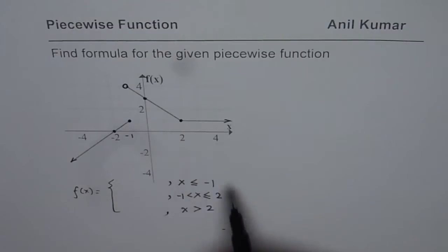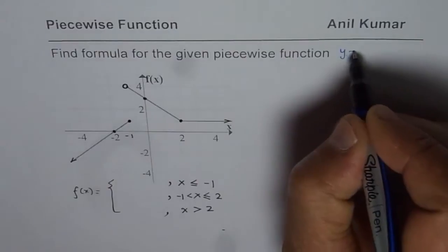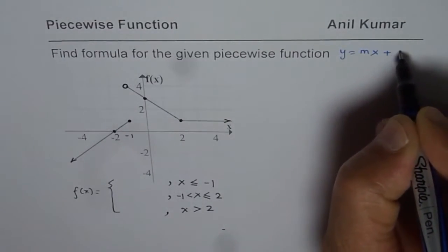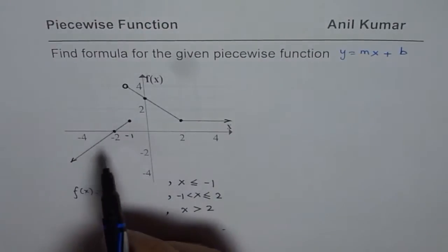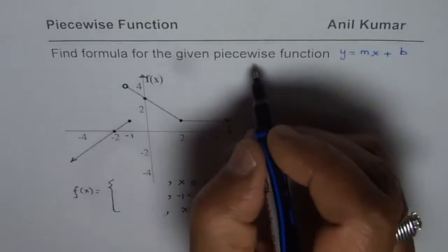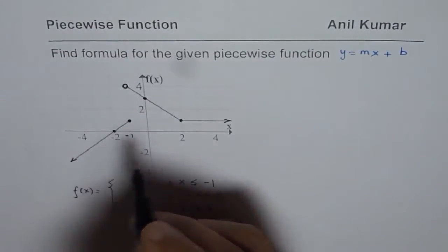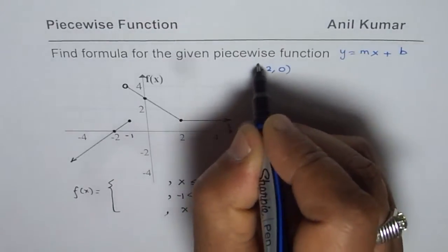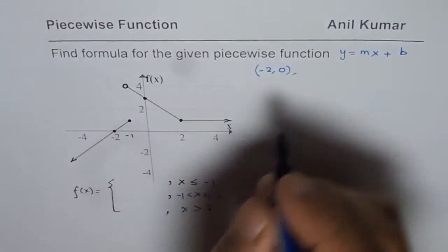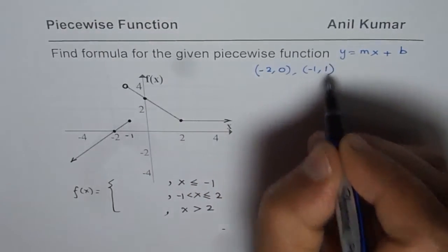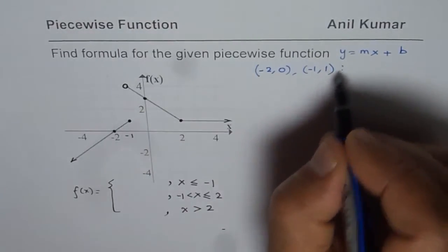Since these are straight lines we will use y equals mx plus b to get the equation of all our functions. For the first case, let me take two points: one point is at x equals minus two with y value zero, and the other point is at x equals minus one with y value plus one. So we can find the slope from these two points.